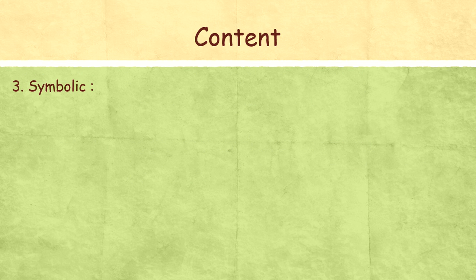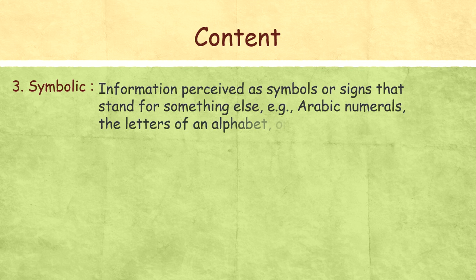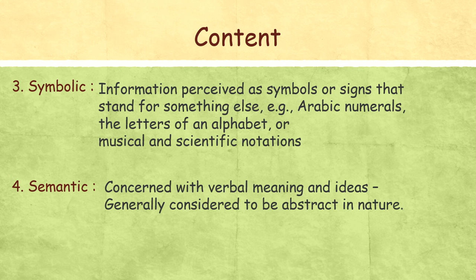The third one is Symbolic, like a symbol, sign, music sign and these all are the symbolic information that we got. Semantic, which has meanings, is concerned with verbal meaning, idea, related to some other things.